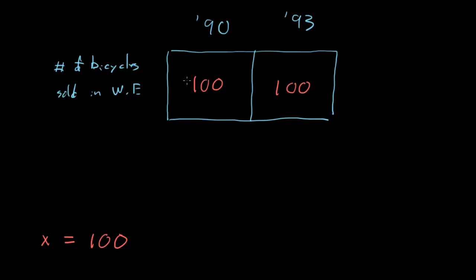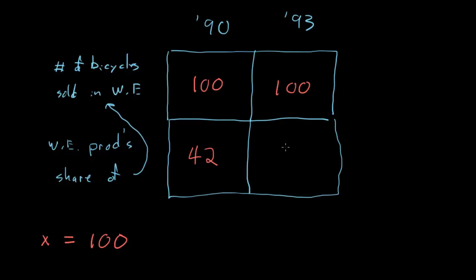So these 100 bicycles were sold in Western Europe. And we're learning about the Western European bicycle producers' share of that market, of those 100. And I'll continue this chart. We know that in 1990, the Western European producers had a 42% share of that 100. And it's nice to pick 100 for exactly this reason. 42% of 100 is just 42. And then in 1993, they had a 33% share of the 100, so they have 33.